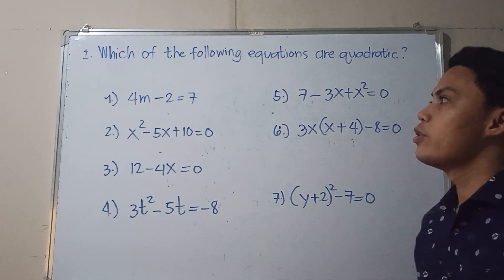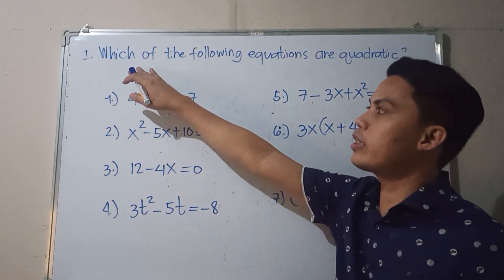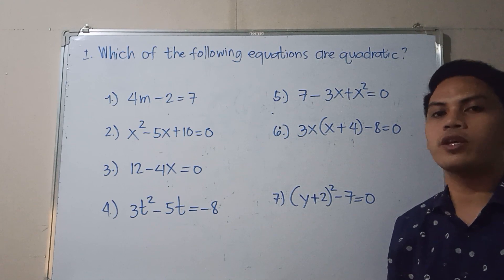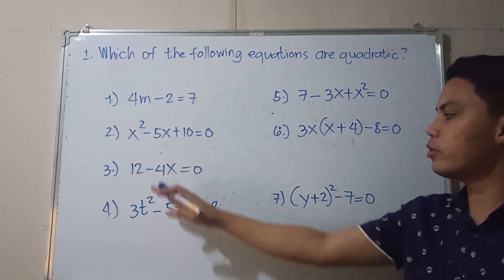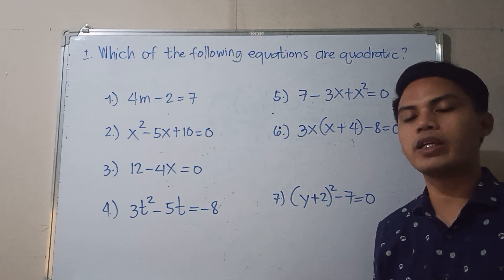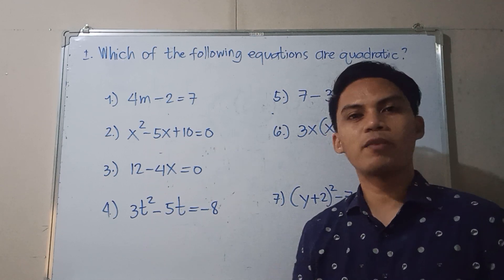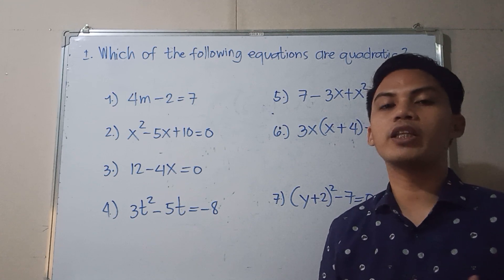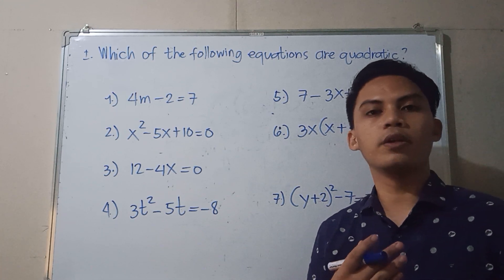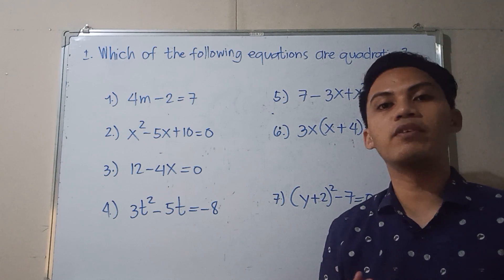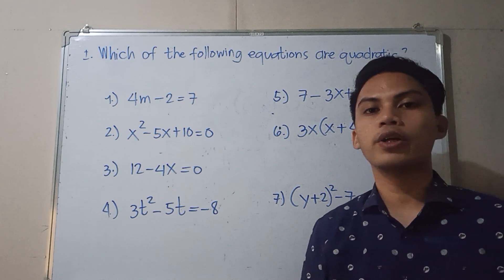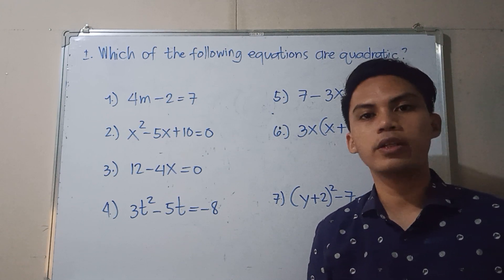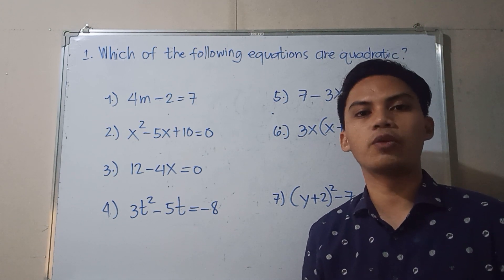Let's try this activity asking which of the following equations are quadratic. Among 7 given equations, we'll determine which are quadratic and which are not. To easily identify if it is a quadratic equation, we look at its variables. If the highest degree of the variable is 2, then the equation represents a quadratic equation. If not, then it is not a quadratic equation.